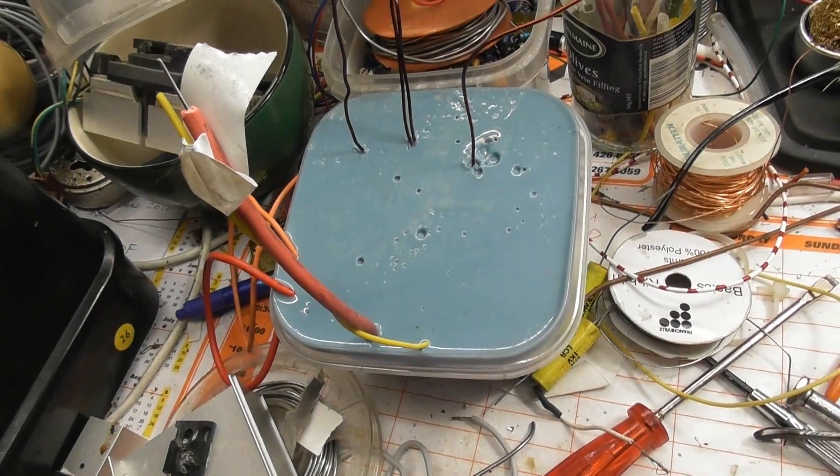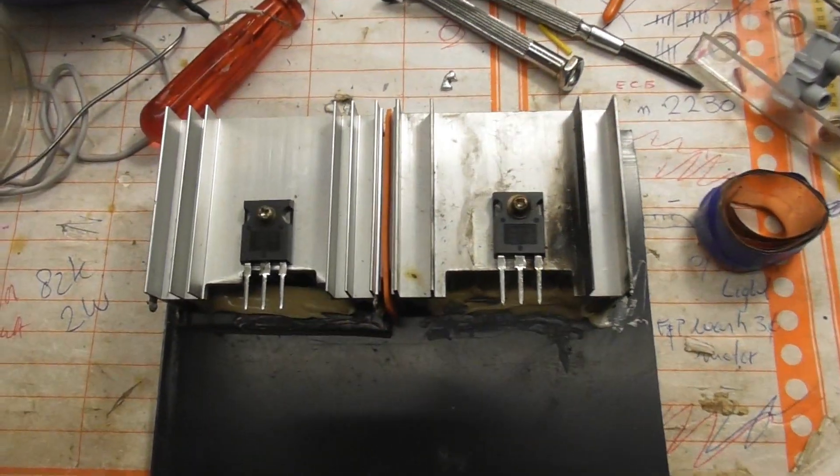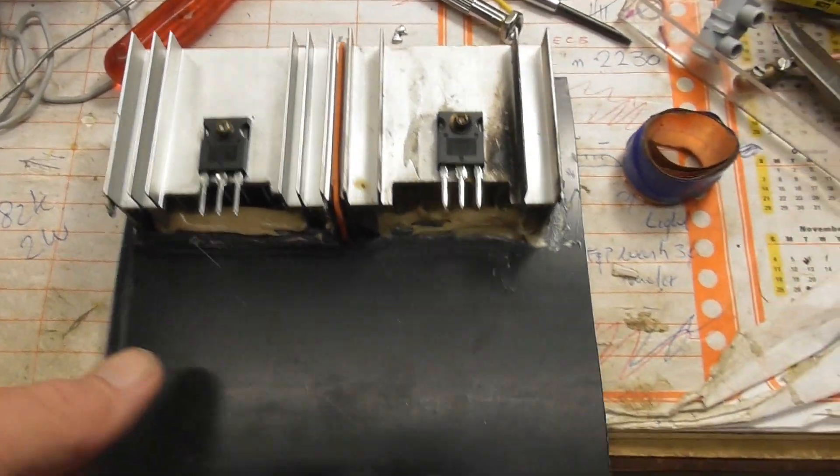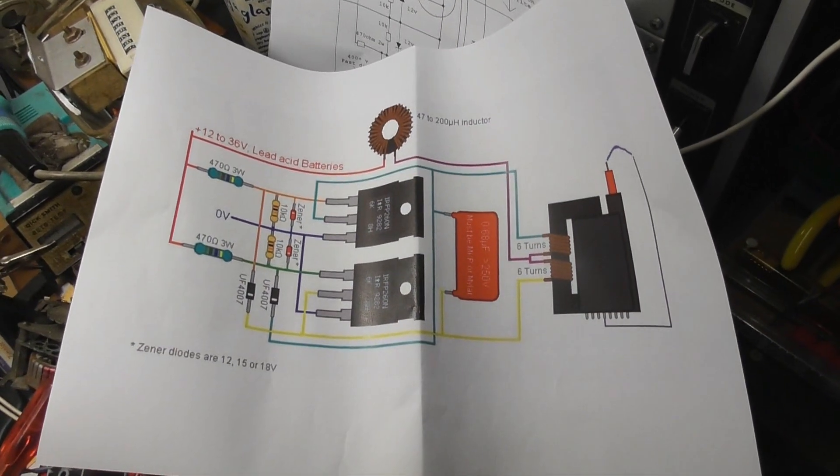So I got my potted flyback in here. I'm just rebuilding another Mazzili oscillator. These are the IRFP250, so I just put them on heat sinks. Two different sizes, but I leveled them up. And following this diagram, I'll show you later in the video.